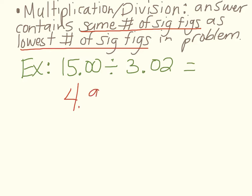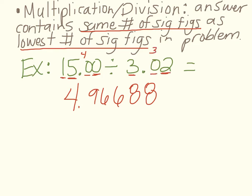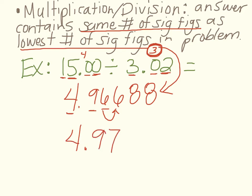When you type that in your calculator, you're going to get several decimal places. The question is how many significant figures should our answer have. Looking back at the problem, count the sig figs: in 15.00, we have 1, 5, and the trailing zeros count because there's a decimal — so that's 4. In 3.02, the 3 and 2 count, and the 0 counts because it's a sandwich zero — so that's 3. The lowest number of sig figs determines your answer, so round to 3 sig figs. The number right behind the third sig fig is greater than 5, so round the 6 up to 7, giving you 4.97 — which has 3 sig figs and is rounded correctly.